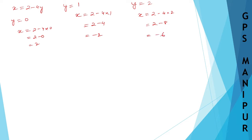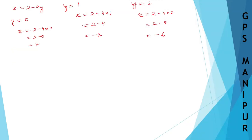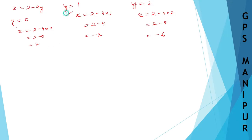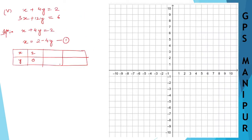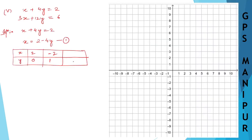Write all these values in the table: when y = 0, x = 2; when y = 1, x = −2; when y = 2, x = −6. Now let us draw the graph.